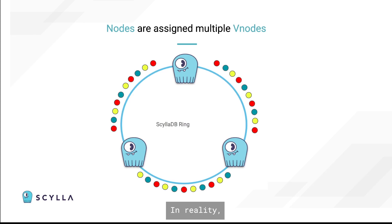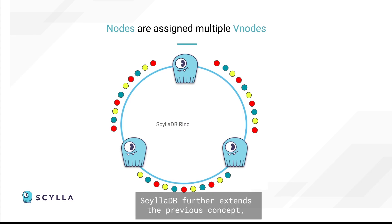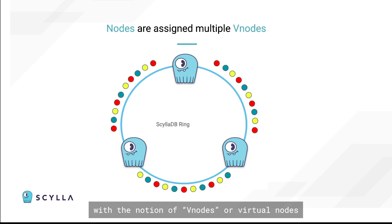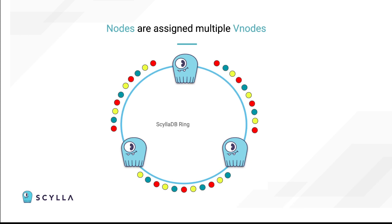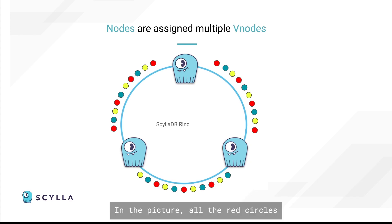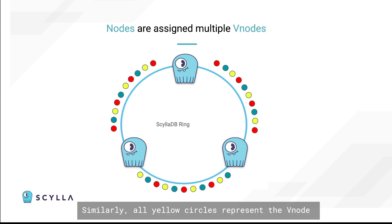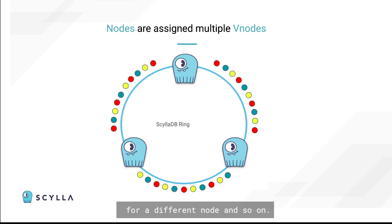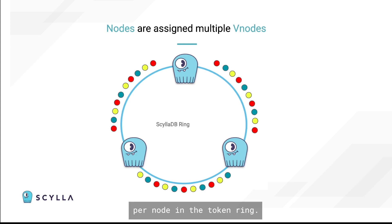ScyllaDB further extends the previous concept with the notion of V-nodes, or virtual nodes, which break up the available range of tokens into smaller ranges. In the picture, all red circles represent V-nodes for a single node. Similarly, all yellow circles represent the V-nodes for a different node, and so on. By default, ScyllaDB assigns a total of 256 token ranges per node in the token ring.